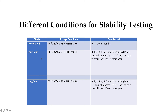For long-term stability studies we have to store the sample at 30 degrees centigrade and 65 percent relative humidity. We have to test initially, then after every month for six months, then after 12 months in the first year, after 18 months and 24 months in the second year, and then twice per year until expiration of the product shelf life.